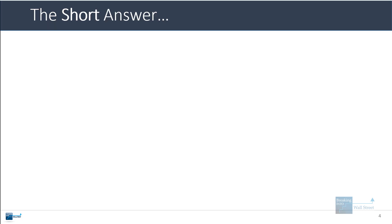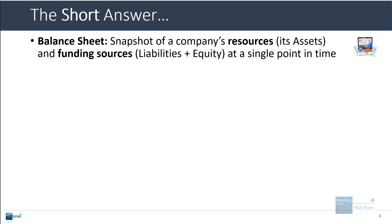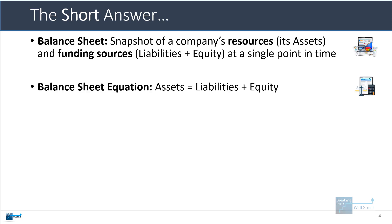I'm going to give you the three-minute answer here, and then if you want more detail you can keep watching. The balance sheet gives you a snapshot of a company's resources — its assets — and its funding sources for those resources — its liabilities and equity — at a single point in time. The most fundamental equation is that assets must equal liabilities plus equity, meaning a company cannot have resources without some funding source.